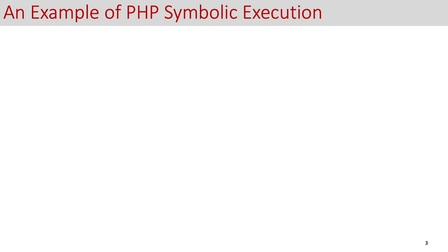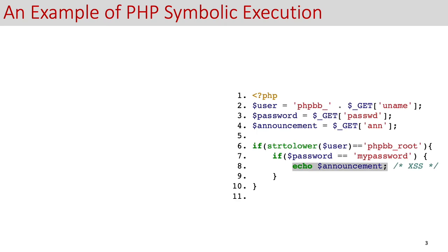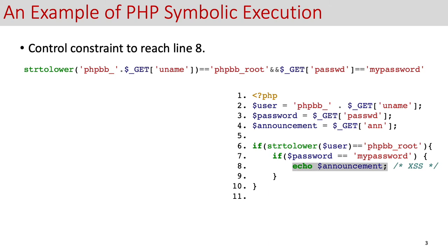Symbolic execution can also be used to PHP programs. For example, given the code on the right, if we'd like to reach line 8, we collect the constraints in the if statements as follows. Furthermore, to trigger the server-side cross-site scripting vulnerability, we can combine the critical variables with certain attack payloads as the data flow constraints.